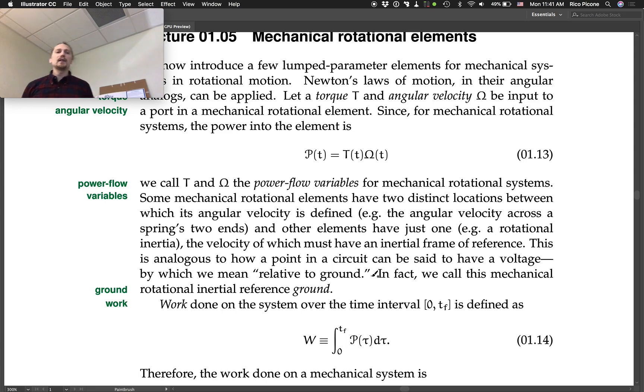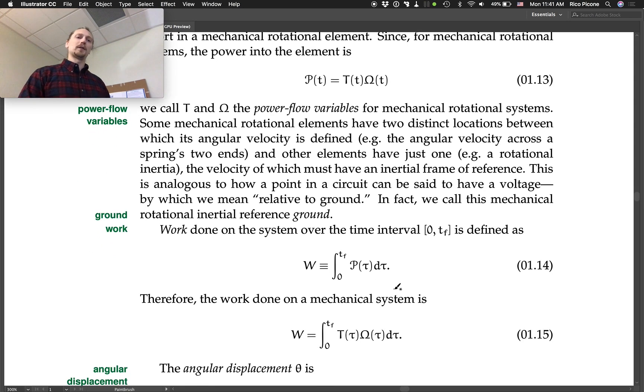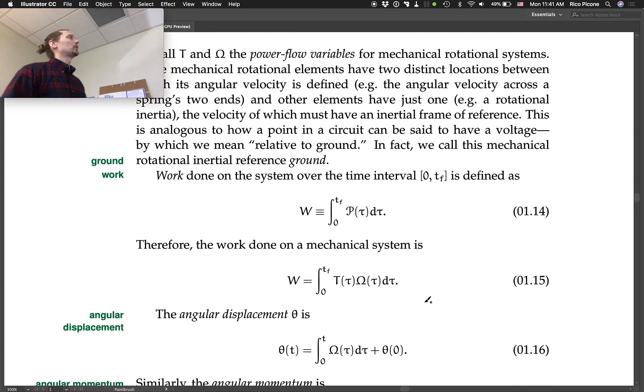This is analogous to how a point in a circuit can be said to have a voltage, by which we mean relative to ground. In fact, we call this mechanical rotational reference ground as well. So once again, we're doing ground. Ground is the reference for everything. So we're going to call ground, ground in mechanical systems and in electronic systems.